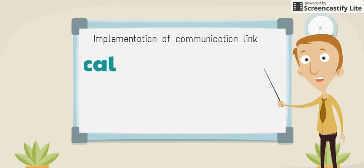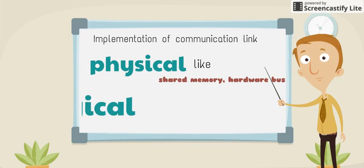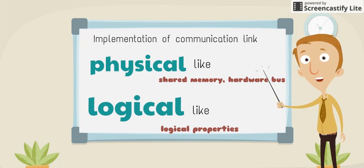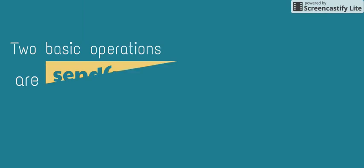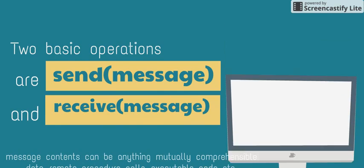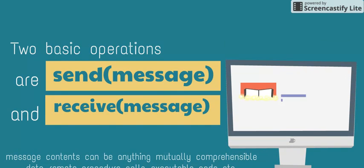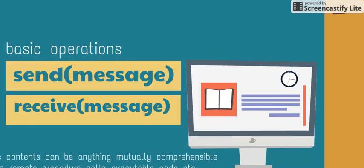Implementation of a communication link can be physical, like shared memory or a hardware bus, or logical, like logical properties. The IPC facility provides two operations: send a message or receive a message. Message size can be fixed or variable, and the contents can be anything mutually comprehensible.